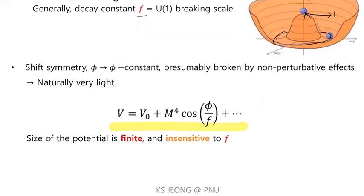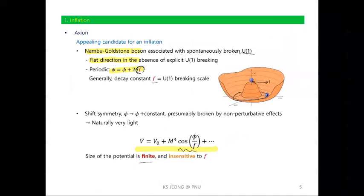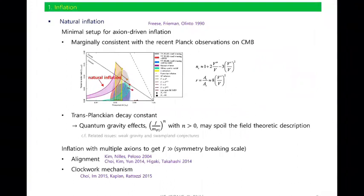In the minimal setup, the potential is written in a simple periodic form. There are several interesting features. One is that the size of the potential is finite — the potential is bounded both from below and above. Another important feature is that the size and shape of the potential is insensitive to the axion decay constant. These are the interesting properties of the axion potential.